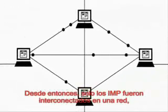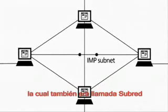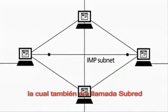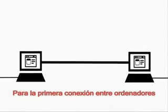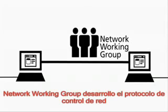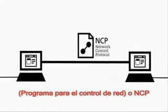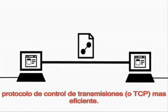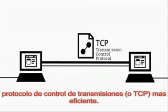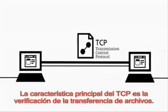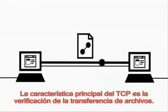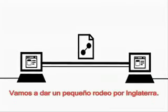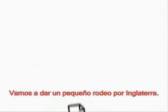The IMP also served as an interface for the mainframe. Since only the IMPs were interconnected in a network, this was also called the IMP subnet. For the first connections between computers, the Network Working Group developed the Network Control Protocol (NCP). Later on, the NCP was replaced by the more efficient Transmission Control Protocol (TCP). The specific feature of the TCP is the verification of file transfer.